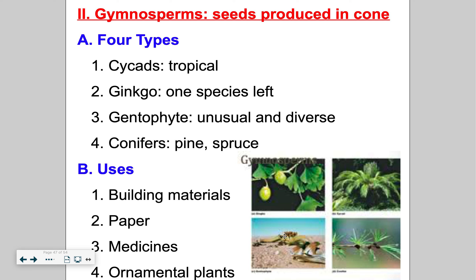Gnetophytes are unusual and diverse — there are only a few species found in Africa, so very small numbers of gnetophytes. And then finally, conifers — these are probably the group you're most familiar with. Think the Christmas tree: pines, spruces, firs — all of those are examples of conifers.